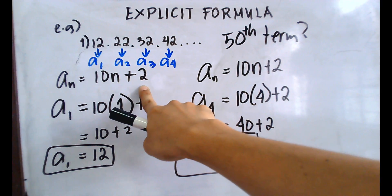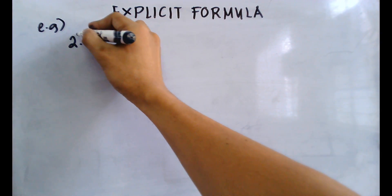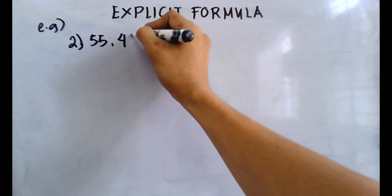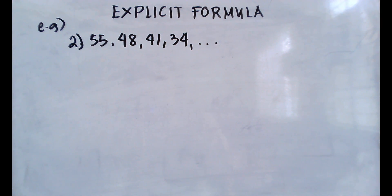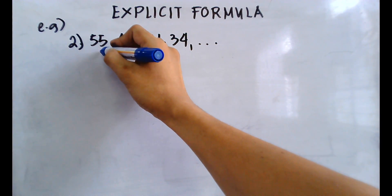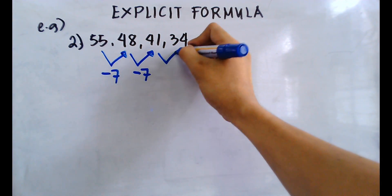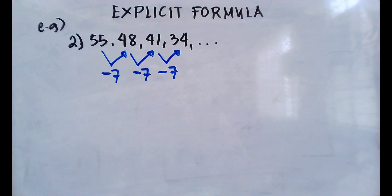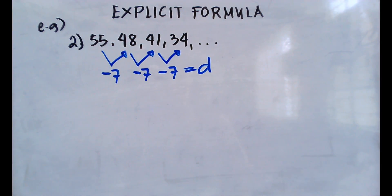Let's try example number two. We have the sequence 55, 48, 41, 34, and so on. Let's first check if it's arithmetic by finding the common difference: 48 minus 55 is negative 7, 41 minus 48 is negative 7, and 34 minus 41 is negative 7. The common difference is negative 7, so this is an arithmetic sequence.